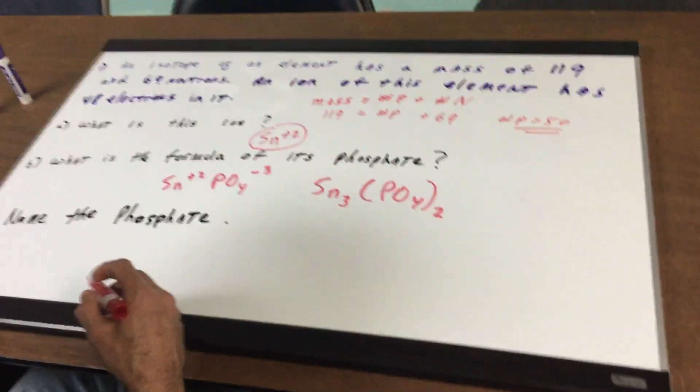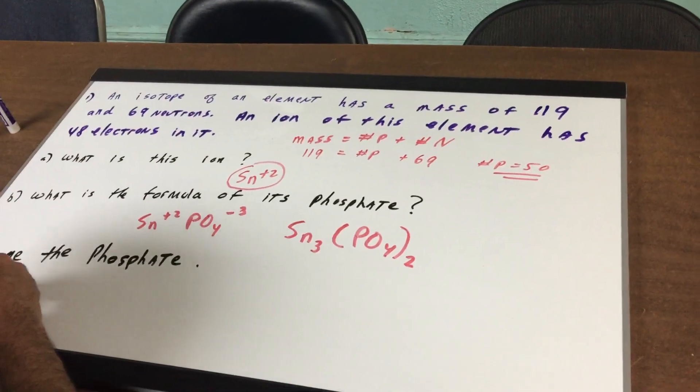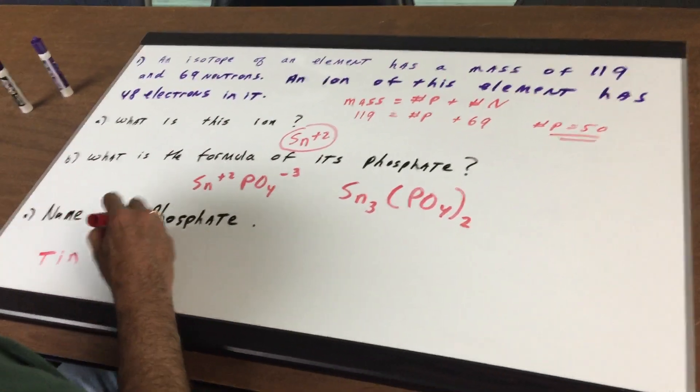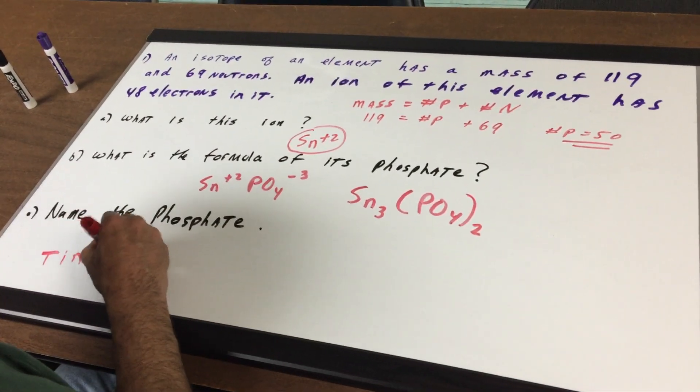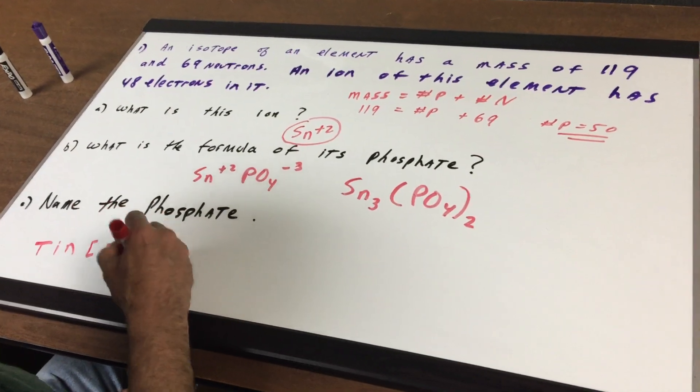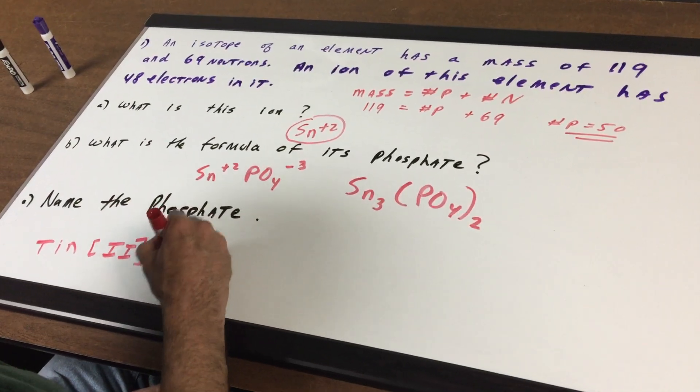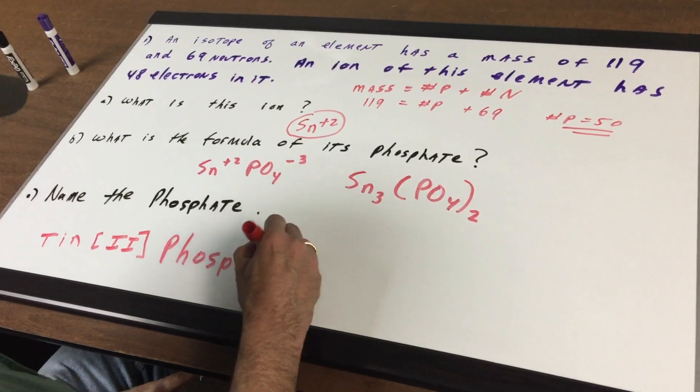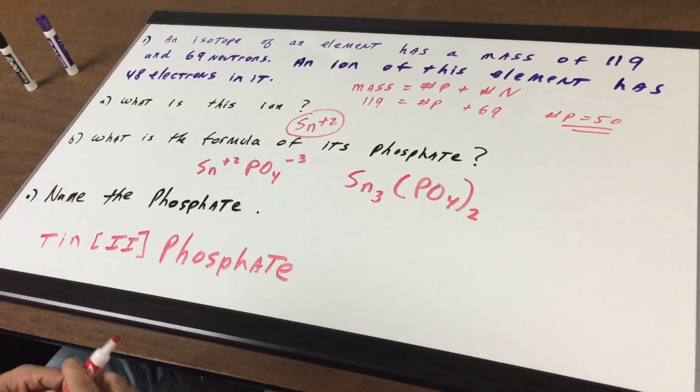Name this phosphate. Well we see we're going to have tin and it's got a plus 2 charge. So on the ion this is tin 2 phosphate. We would need the roman numeral for this.